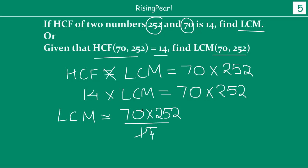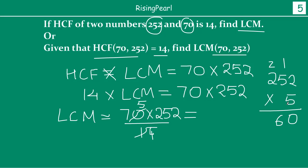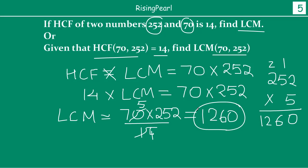We know that 14 times 5 equals 70, so it simplifies to 252 times 5, which gives us 1260. So without actually performing the full LCM process, using this relationship we can say the LCM equals 1260. You can go ahead and try it yourself to verify that 1260 is indeed the LCM of 252 and 70.